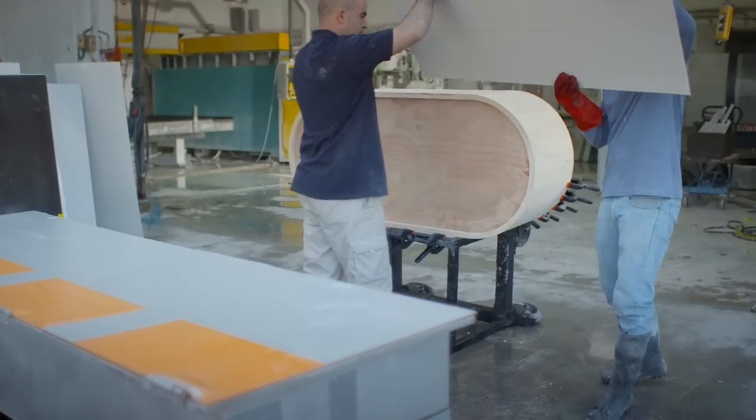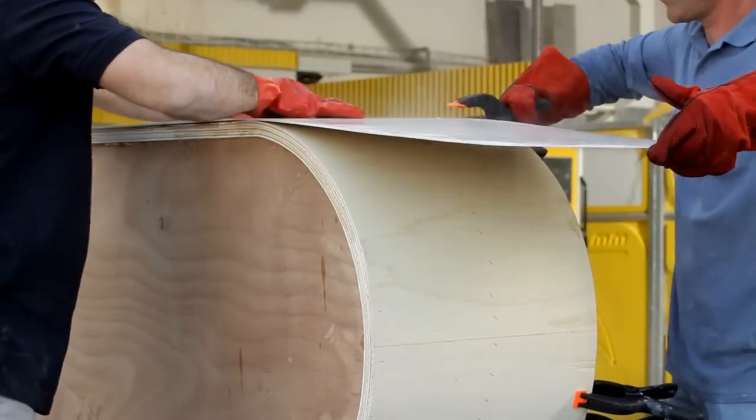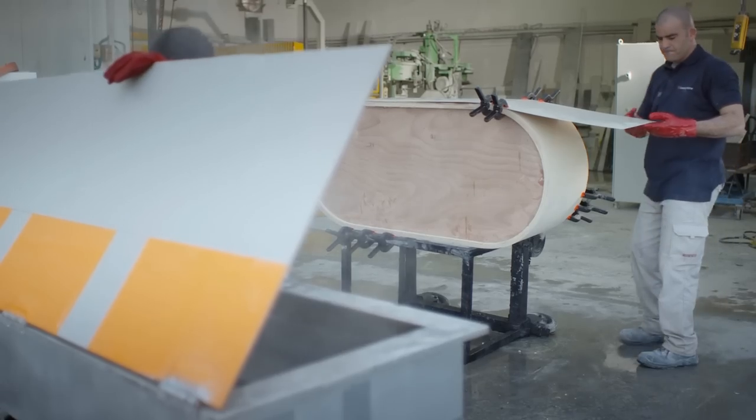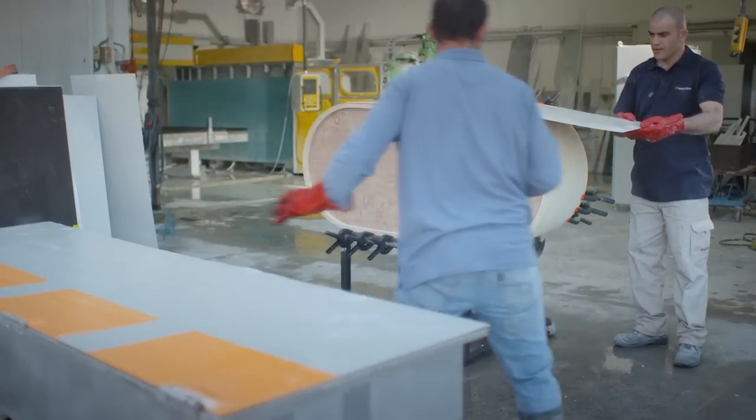Bend the flexible Caesarstone around the template and secure it with clamps. You will need to pour hot water over the Caesarstone a few times to keep it flexible. Otherwise, it may break.